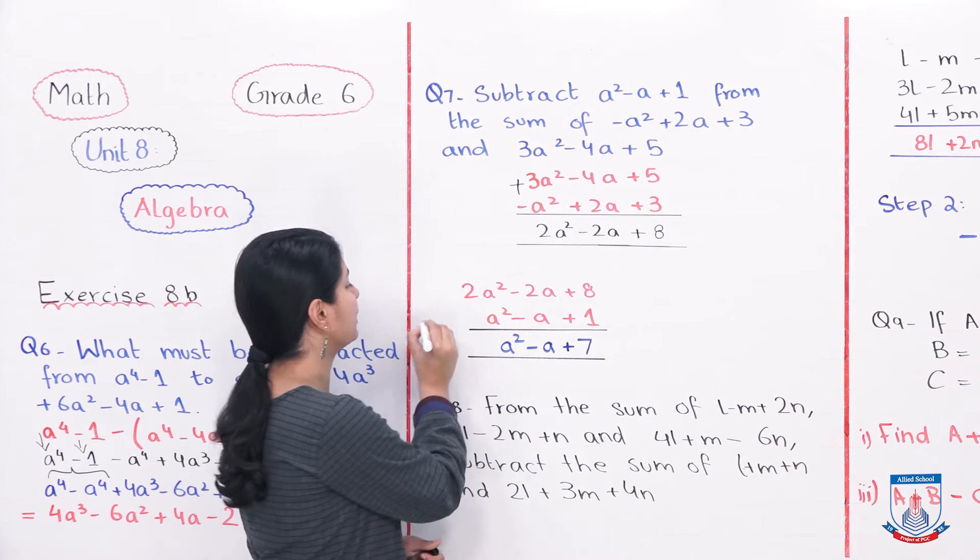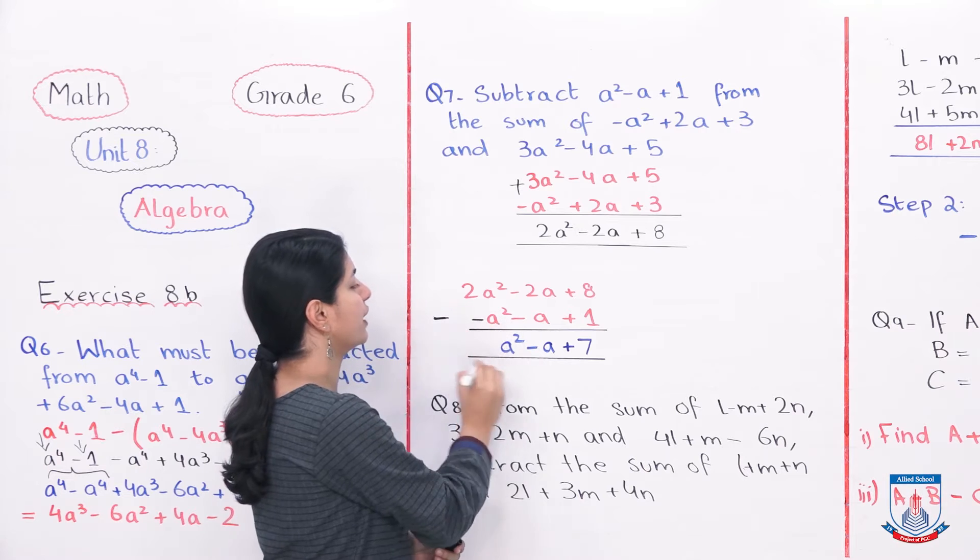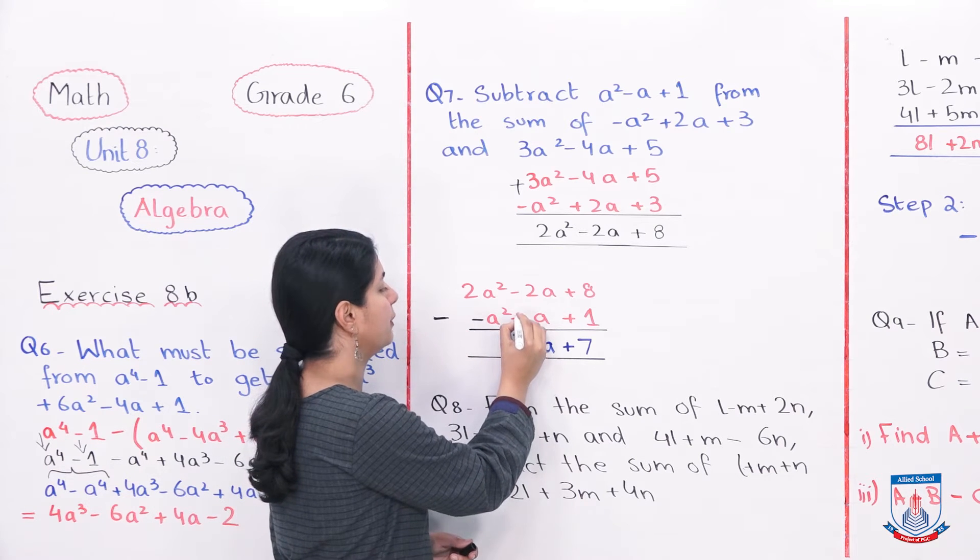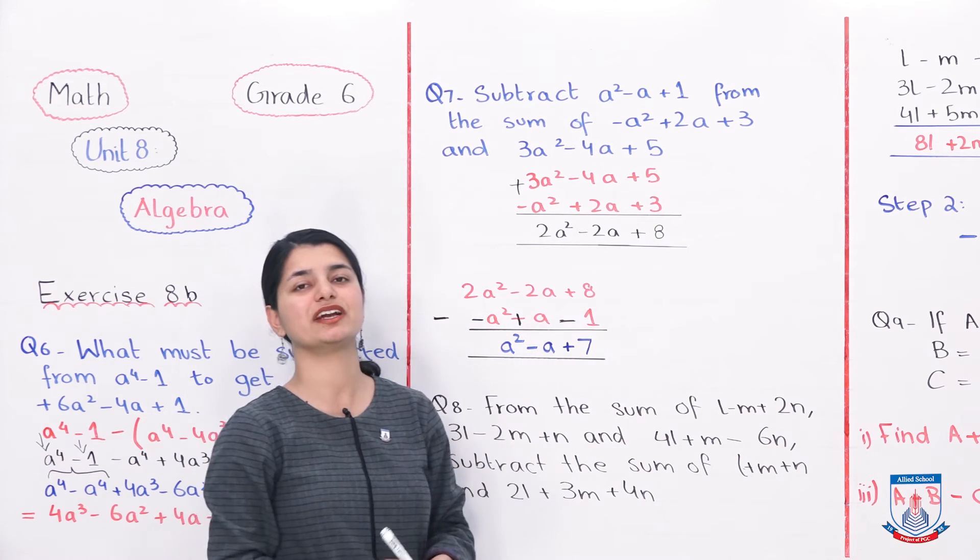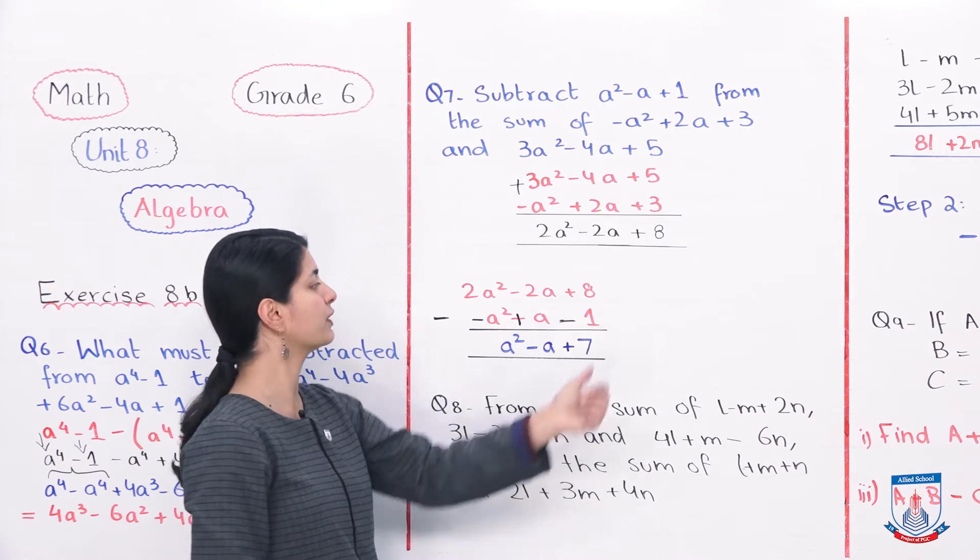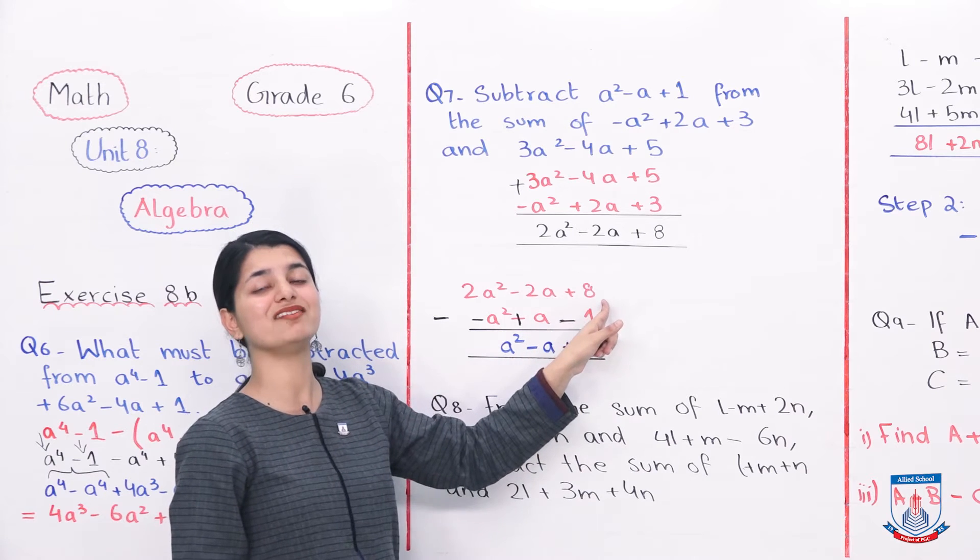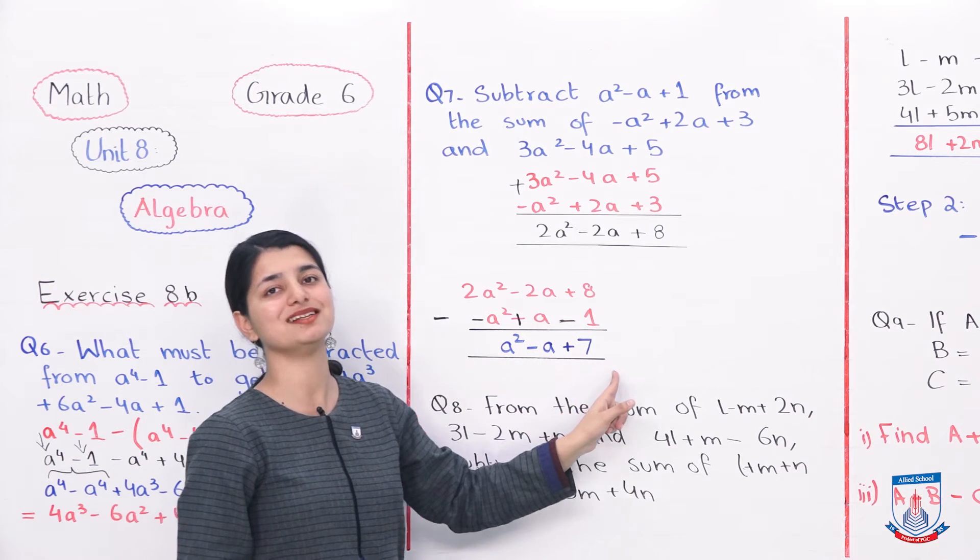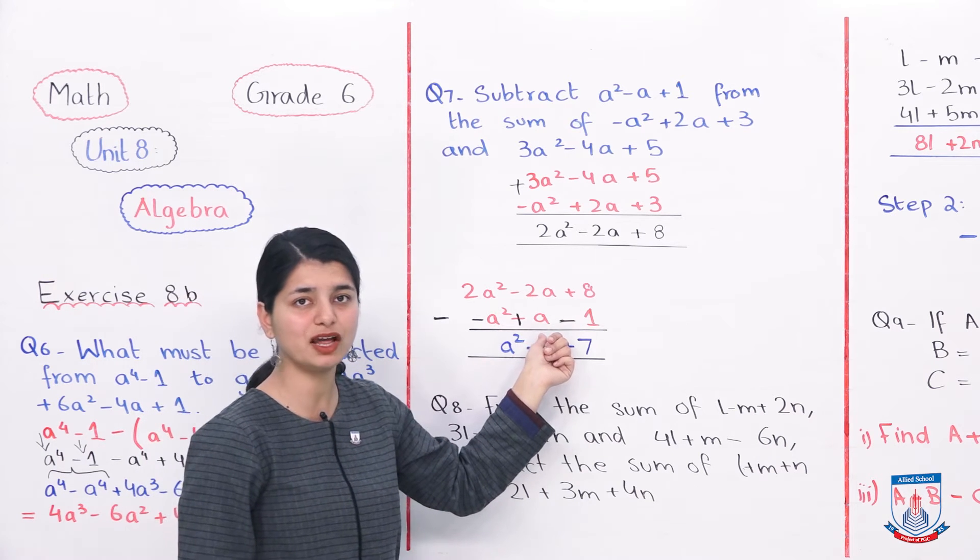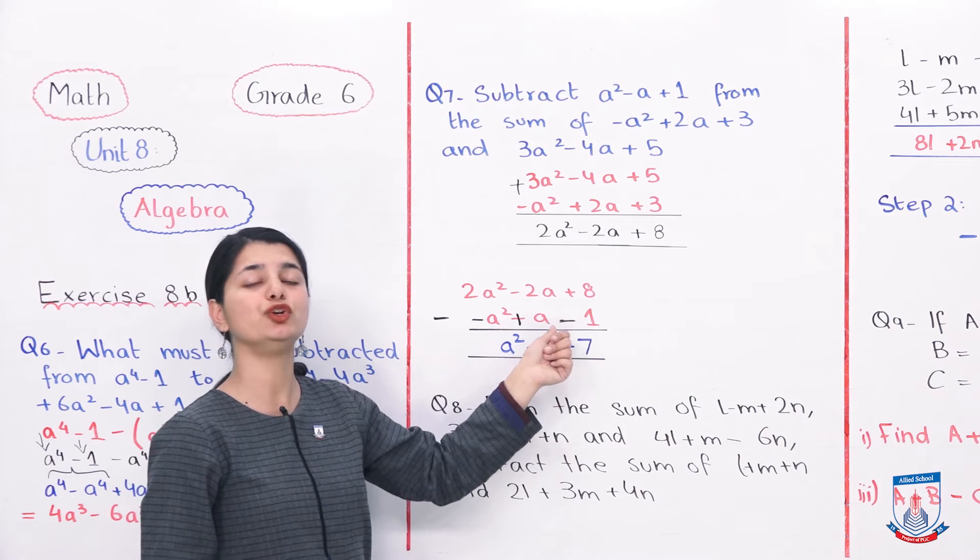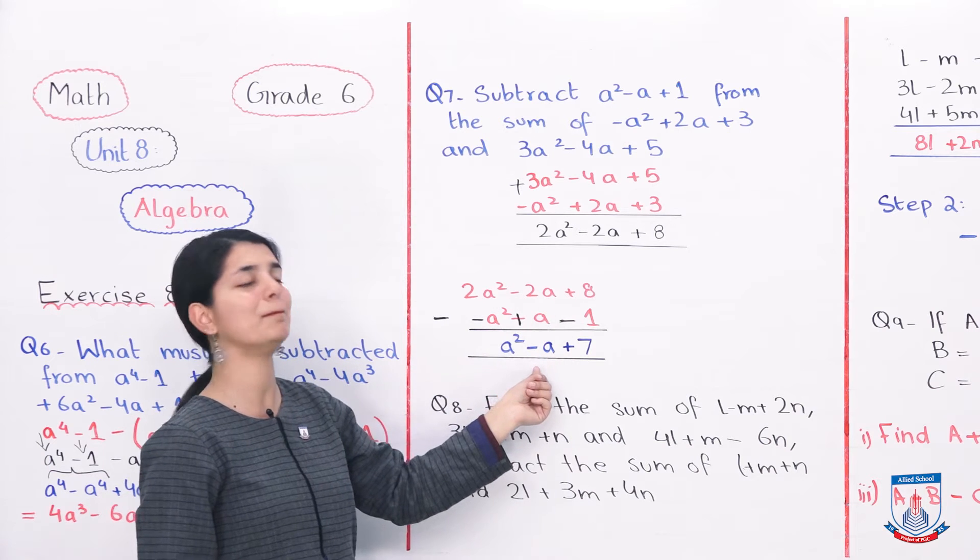In subtraction, what will be the main work? All signs will change. So this positive A is, it became minus. This negative A is, it became positive. And this positive 1 is, it became negative. In this way, after changing signs, we will solve it. 8 and 1, plus minus means to subtract, 7. And because plus is with 8, below we will get plus 7. After that, 2A and A - minus is, plus is again, we have to subtract because of different signs. 2A minus A is A, and because 2 is bigger, which has the minus sign with it, below also minus came.